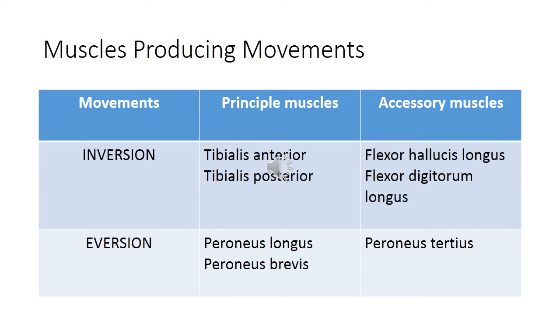In case of eversion, the principal muscles are peroneus longus and peroneus brevis, and accessory muscle is peroneus tertius.